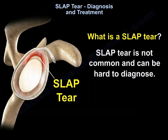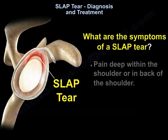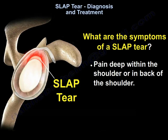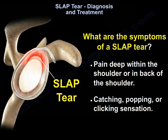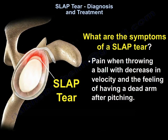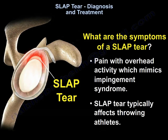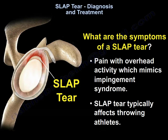SLAP tear is not common and can be hard to diagnose. Symptoms of a SLAP tear include pain deep within the shoulder or in the back of the shoulder, a catching, popping or clicking sensation, pain when throwing a ball with decreased velocity and a feeling of having a dead arm after pitching, and pain with overhead activity which mimics impingement syndrome. SLAP tear typically affects throwing athletes.